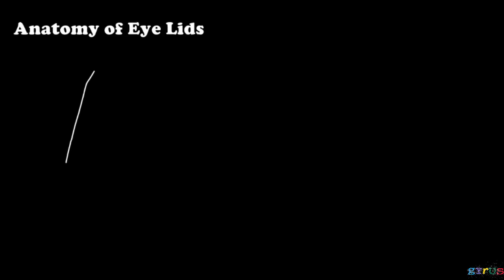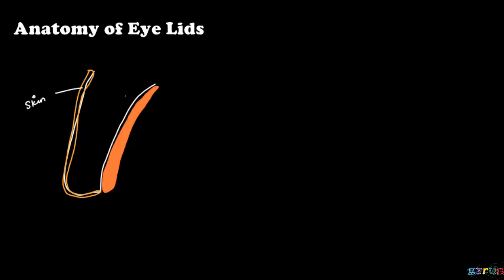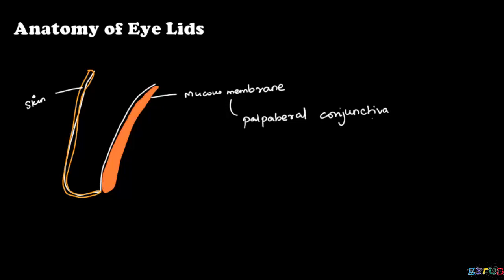In this video, we will be seeing about the anatomy of the eyelids. Anteriorly, it is covered by the skin and posteriorly, it is covered by the mucous membrane. This mucous membrane is nothing but the palpebral conjunctiva, also called the tarsal conjunctiva.